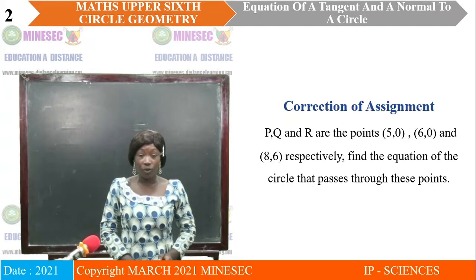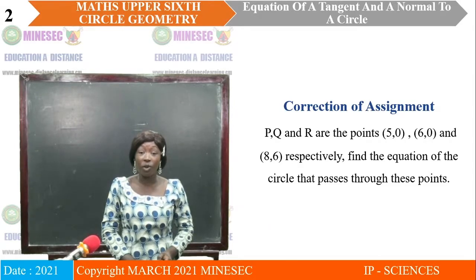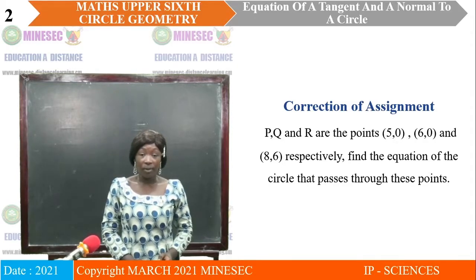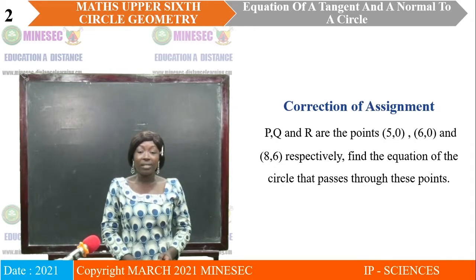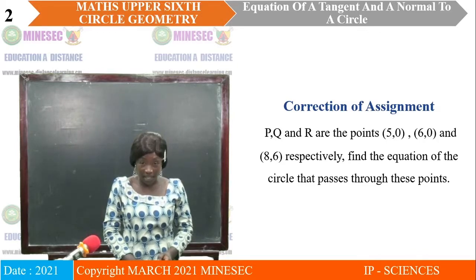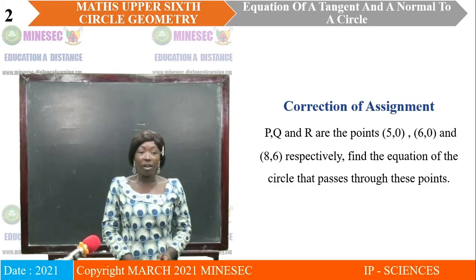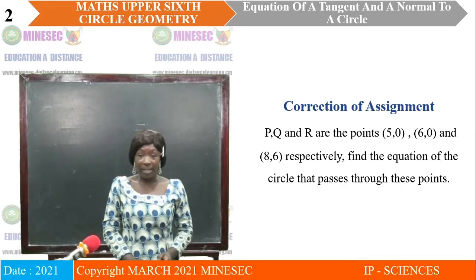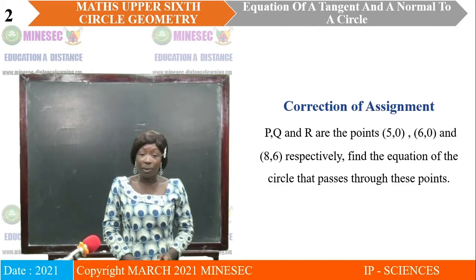But before we begin the lesson of today, we shall look at the correction of the assignments of the previous lesson. We have as question: P, Q, and R are the points (5, 0), (6, 0), and (8, 6) respectively. Find the equation of the circle that passes through these three points. This question reminds us that the title of our previous lesson was the equation of a circle that passes through three points.